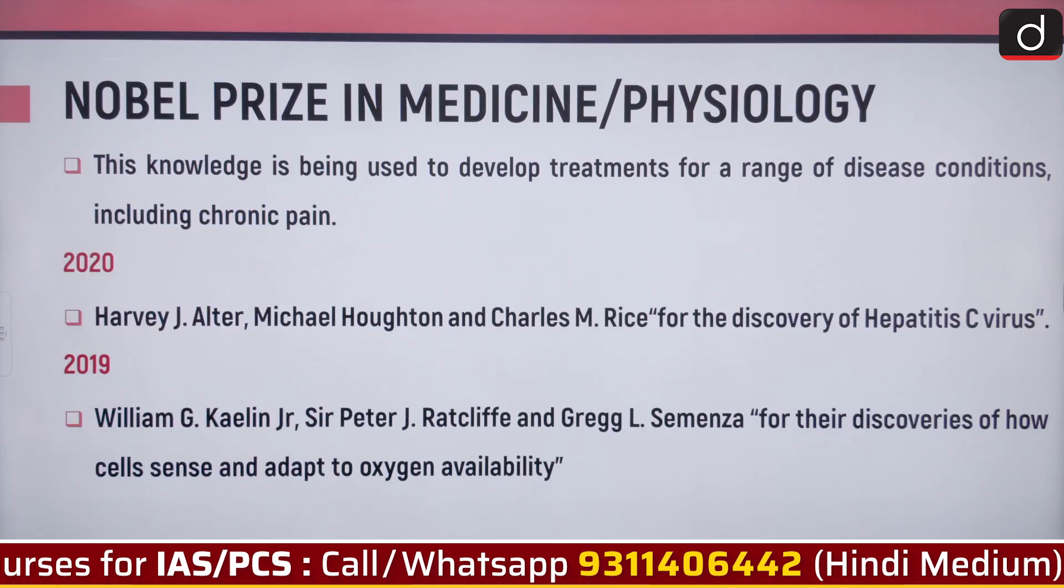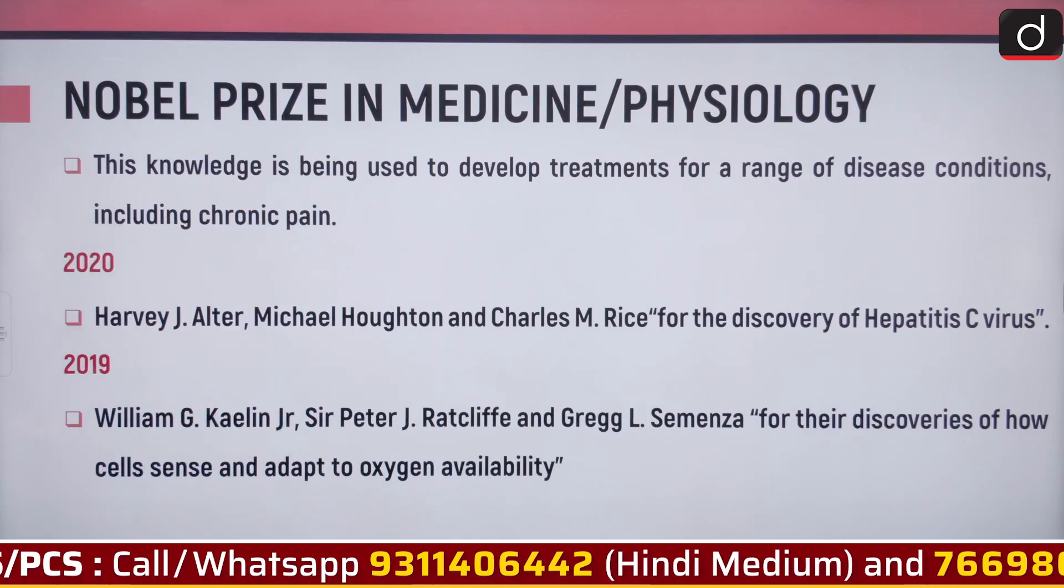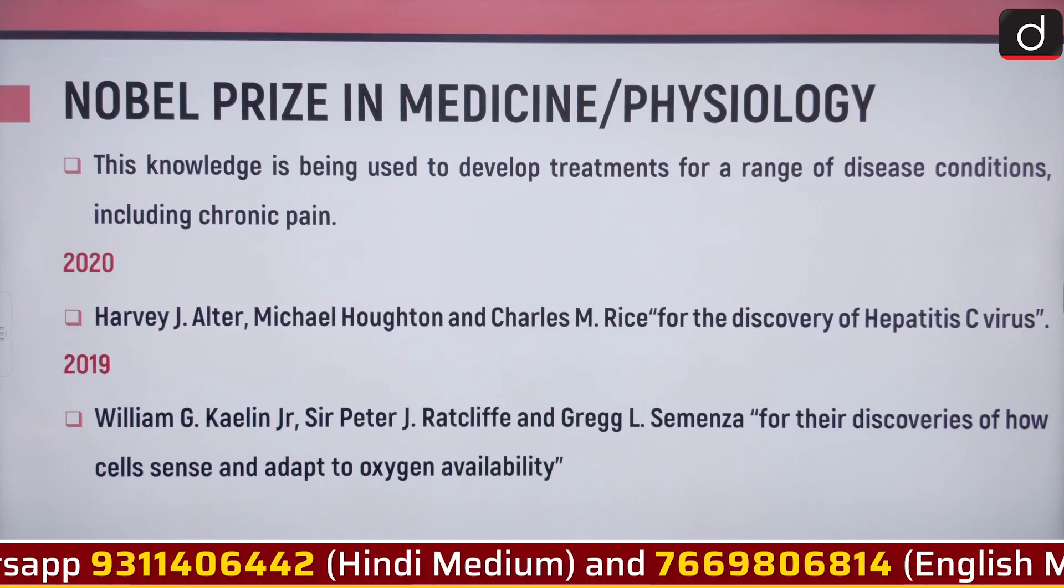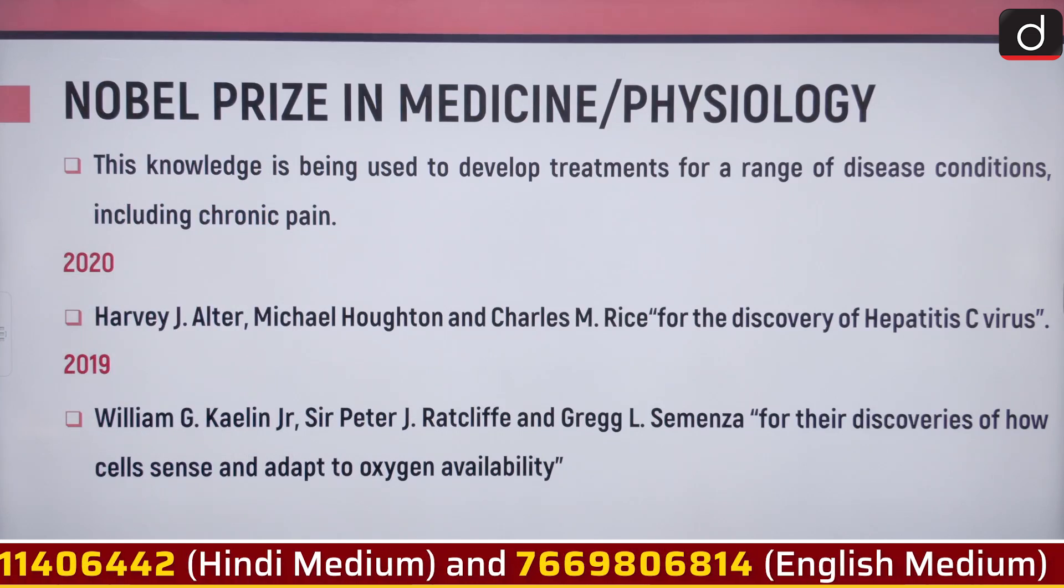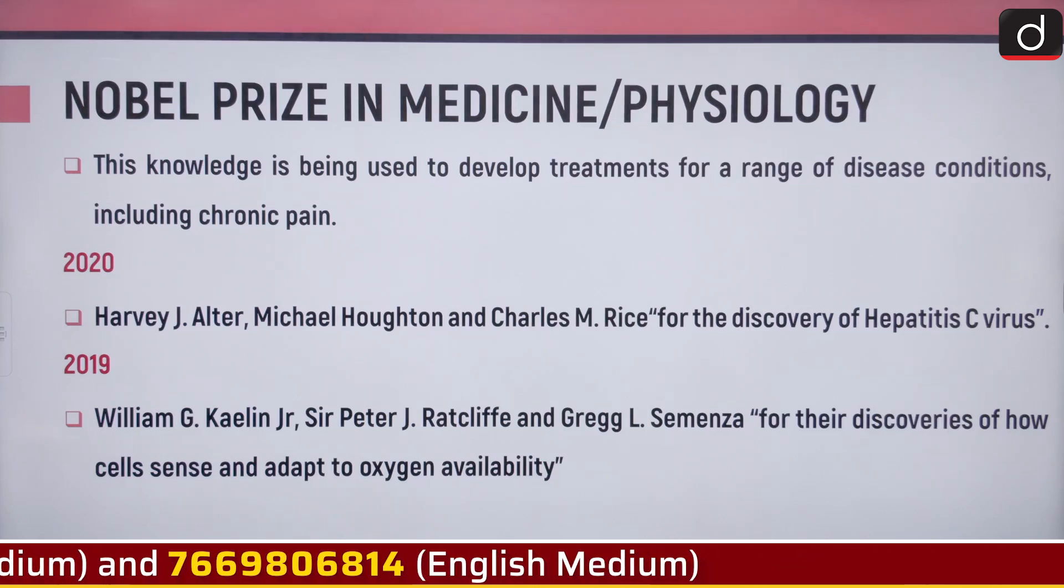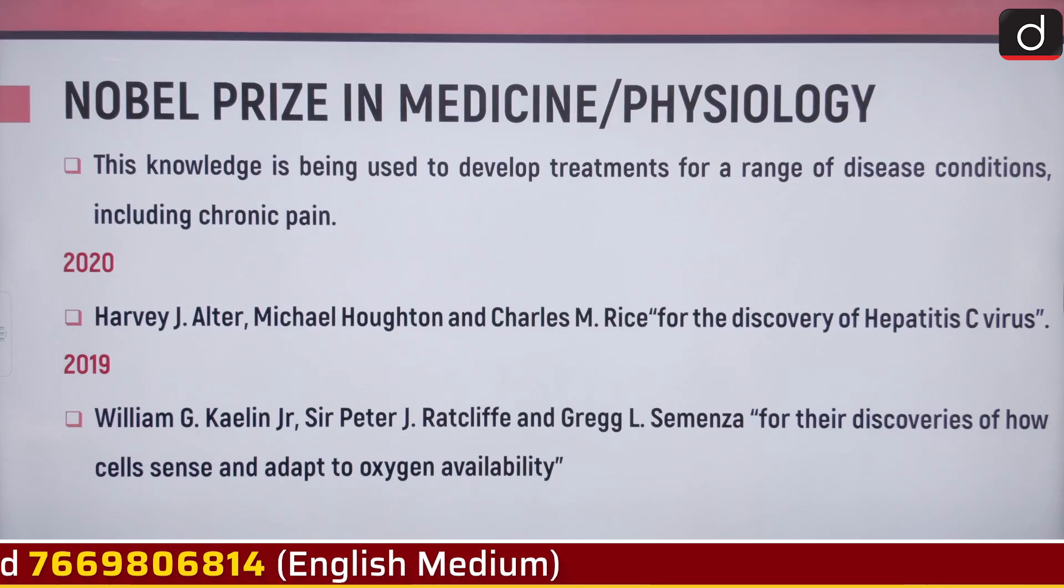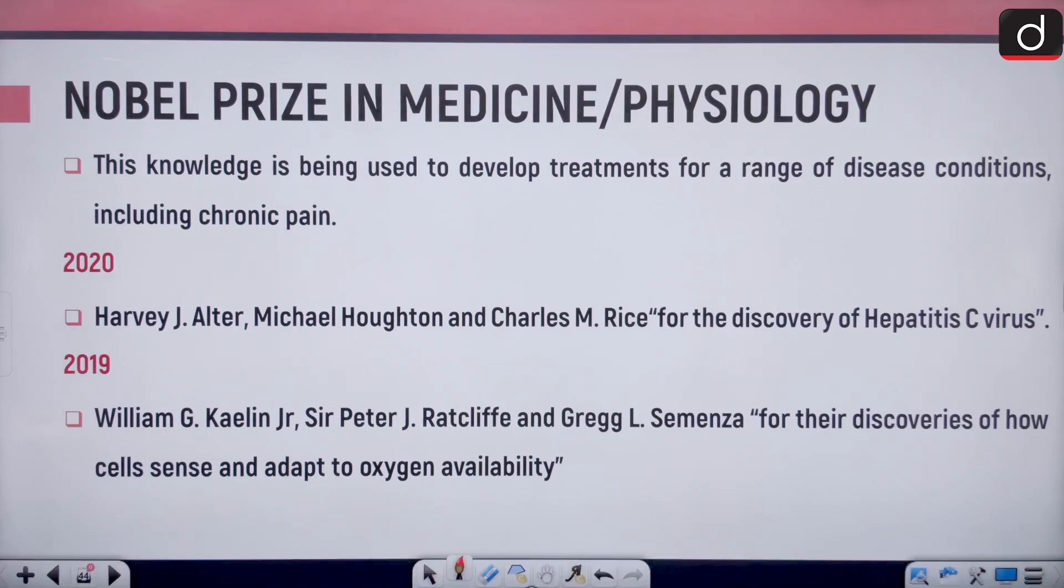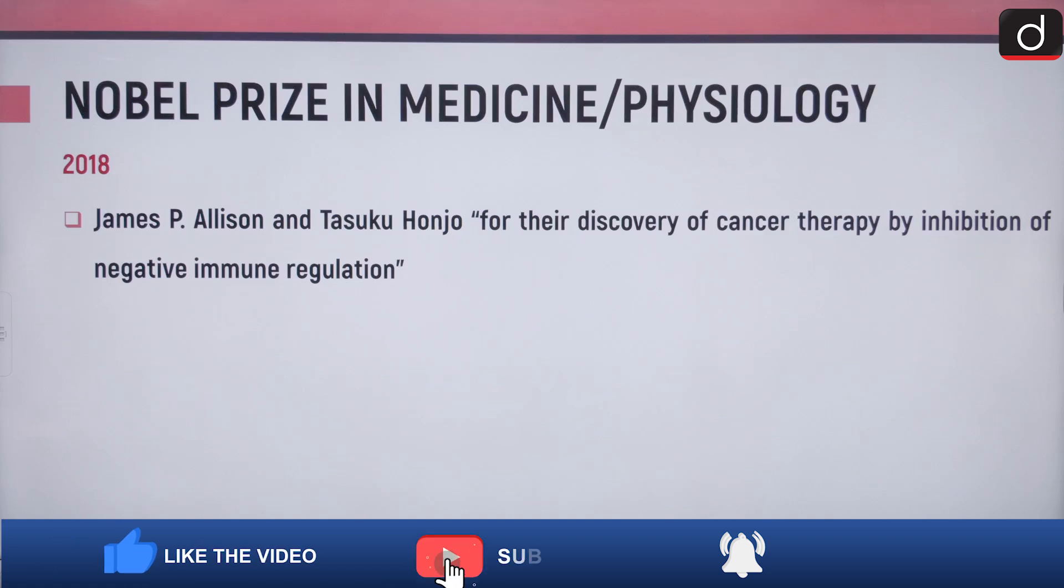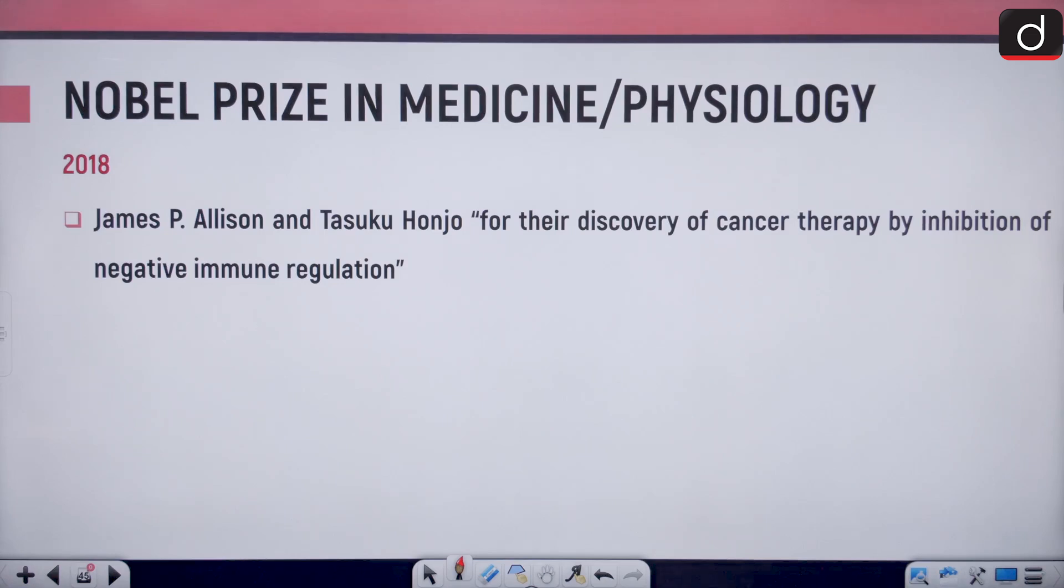In 2020, Harvey J. Alter, Michael Houghton and Charles M. Rice won the Nobel Prize in medicine for the discovery of hepatitis C virus. In 2019, William J. Kalin Jr., Sir Peter J. Radcliffe and Greg L. Semenza won for their discoveries of how cells sense and adapt to oxygen availability. In 2018, James P. Allison and Tasuku Honjo won for the discovery of cancer therapy by inhibition of negative immune regulation.